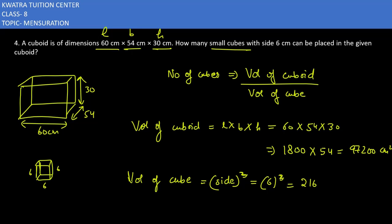Now what you have to do next is find the number of cubes. And how? Number of cubes will be volume of cuboid divided by volume of cube. So what was yours? 97,200 divided by 216. So yes, if you divide these two numbers, what value you will get is 450. So 450 small cubes can be placed within this cuboid. How many cubes can come here? 450. So 450 cubes is placed in this cuboid if their side is of 6 cm.